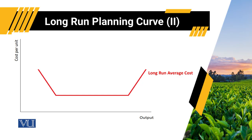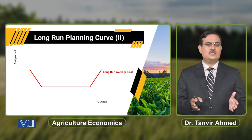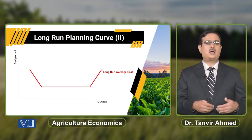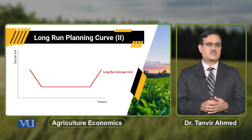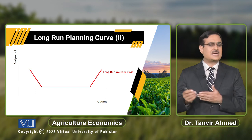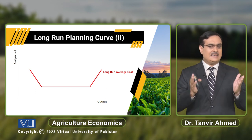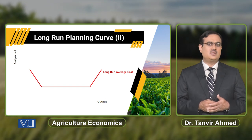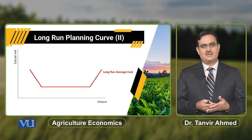अगर हम इस सारे को summarize करें — the long run average cost curve operates under increasing returns to scale, constant returns to scale, and decreasing returns to scale. Usually जब हम कहते हैं long run average cost curve is a U-shaped curve, तो उस U-shaped curve में we are not in a position to clearly say something about operation under constant returns to scale. लेकिन जब आप इस pattern पर curve draw करोगे जैसा कि screen पर नजर आ रही है, तो यह clearly तीन different returns to scale report करेगा — declining portion reports increasing returns to scale, flatter portion reports constant returns to scale, और rising portion reports decreasing returns to scale.